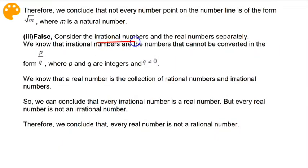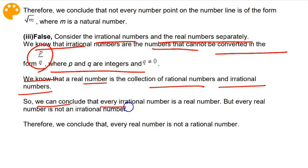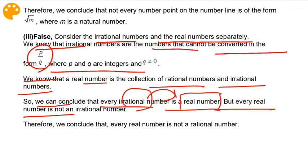Consider irrational numbers and real numbers separately. We know that irrational numbers are numbers that cannot be converted in the form p/q, where p and q are integers and q is not equal to zero. We know that the real number is a collection of rational numbers and irrational numbers. So every irrational number is a real number, but every real number is not an irrational number. Therefore we conclude that every real number is not an irrational number.